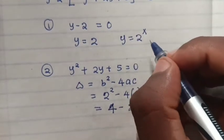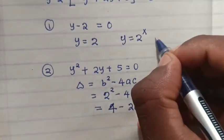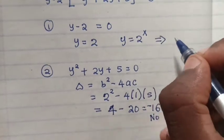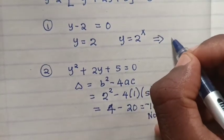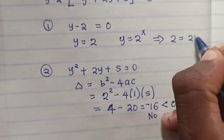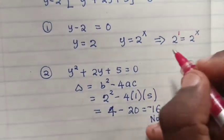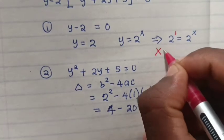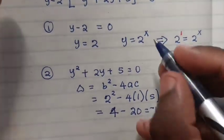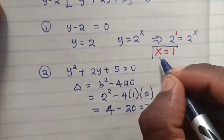But we know we let y equal 2^x. So 2^x equals 2^1. So we can compare, x equals 1. So the value of x is 1.